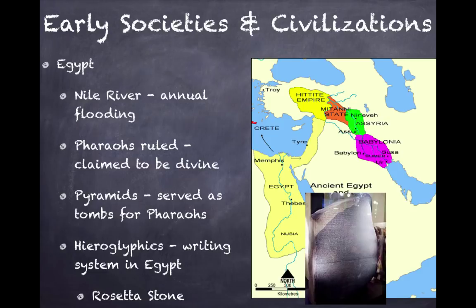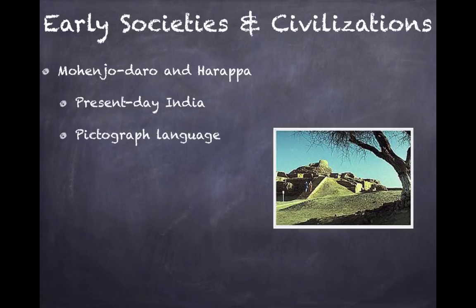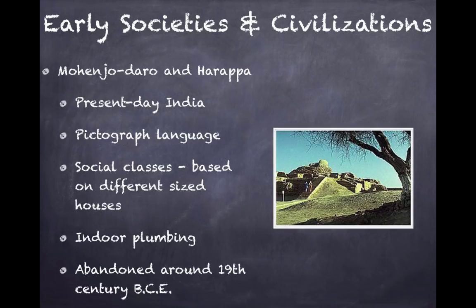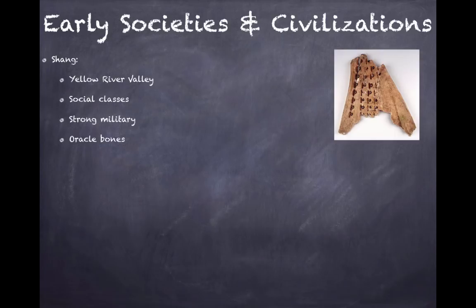In Mohenjo-daro and Harappa in the Indus River Valley, present-day India, there was a pictograph language. Social classes are believed to have developed based on different-sized houses, suggesting some people were wealthier than others. They also had indoor plumbing, which was incredibly advanced for its time, and the civilization was abandoned around the 19th century BCE. The Shang civilization in China developed along the Yellow River Valley — they had social classes, a strong military, and used oracle bones to ask questions, interpreted after being hardened by fire.